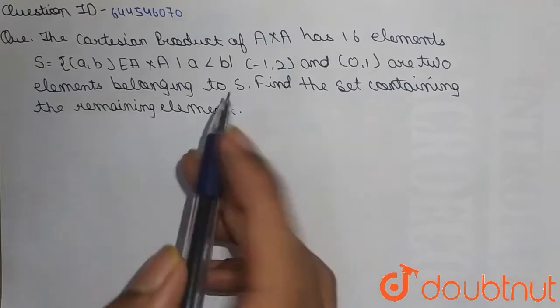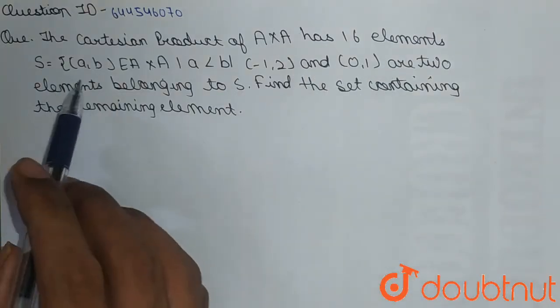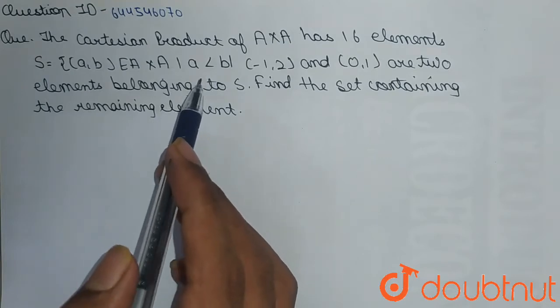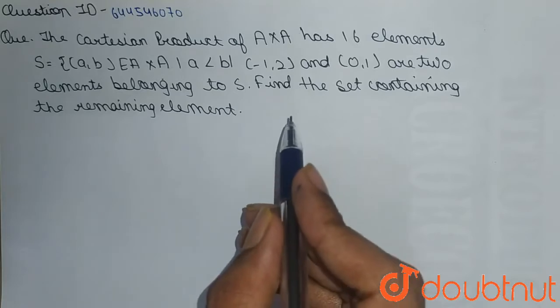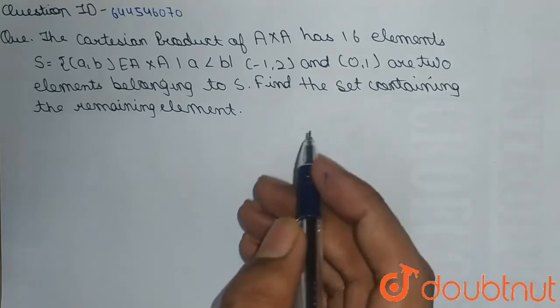Hello friends, our question is: the Cartesian product of A cross A has 16 elements. S = {(a,b) ∈ A×A | a < b}. (-1,2) and (0,1) are two elements belonging to S. We have to find the set containing the remaining elements.